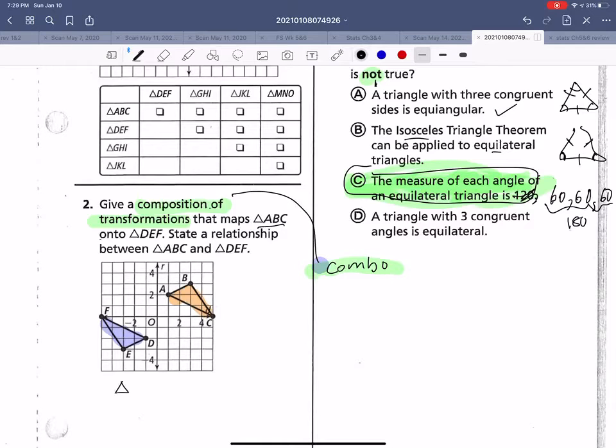So what is the relationship? We know that ABC is congruent to DEF. Because we know by the definition of composition, compositions of rigid motion create congruent shapes. Now, it doesn't say I have to write out how to map one on top of the other, but I could just for practice.